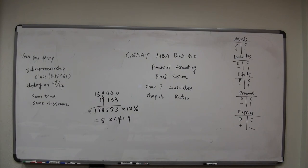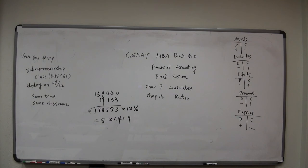Okay, let's go to the second ratio: ROA — return on assets. I think we can get a volunteer right now. Without calculating anything or looking at your book, which number should be bigger — ROE or ROA? Which percentage should be higher?